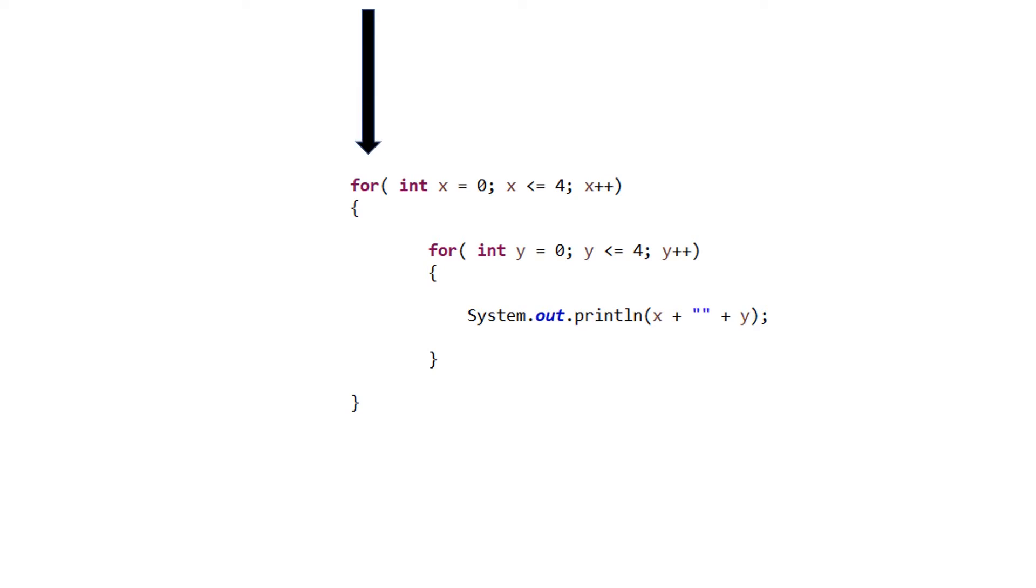This segment of code begins with an outer for loop, which we will track using the large red arrow on the left. The outer loop statement begins with a declaration of the variable x, which will be used to control this loop. X is given an initial value of zero. Let's place a graphic of this value here to help us keep track of the x value as we move through the outer and inner loops.